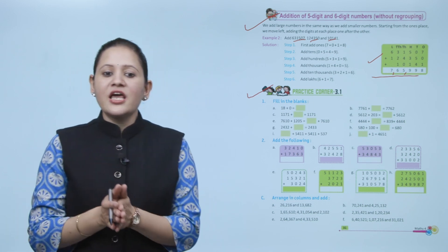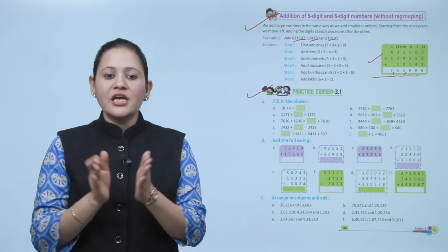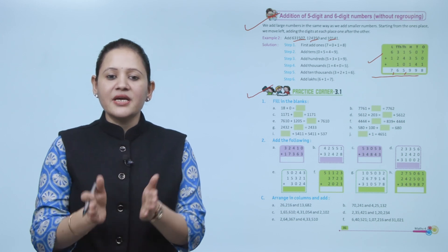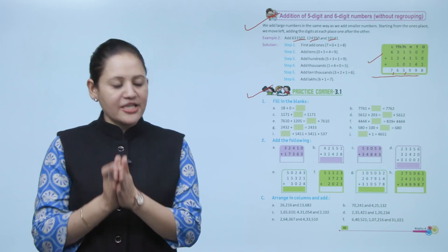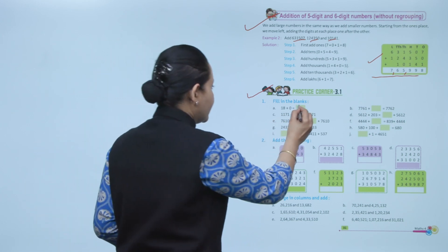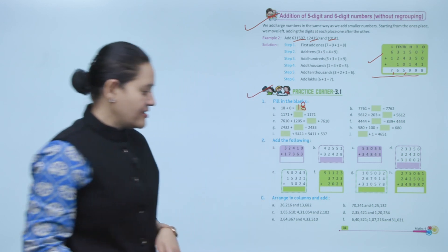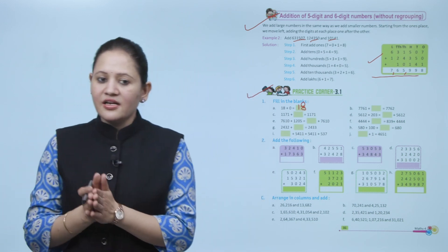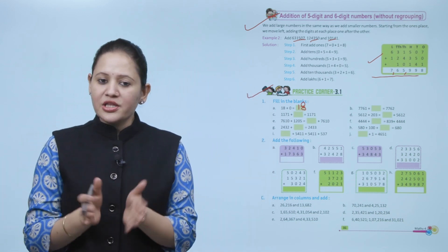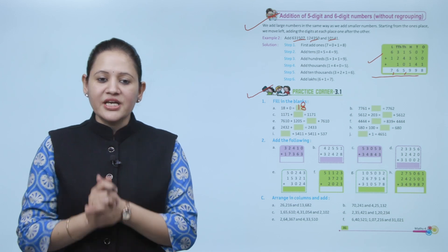Next is Practice Corner 3.1. Fill in the blanks: 18 plus 0. Since adding zero to any number gives the number itself, the answer is 18. You have to practice all the questions of this exercise. We'll move to the next topic.